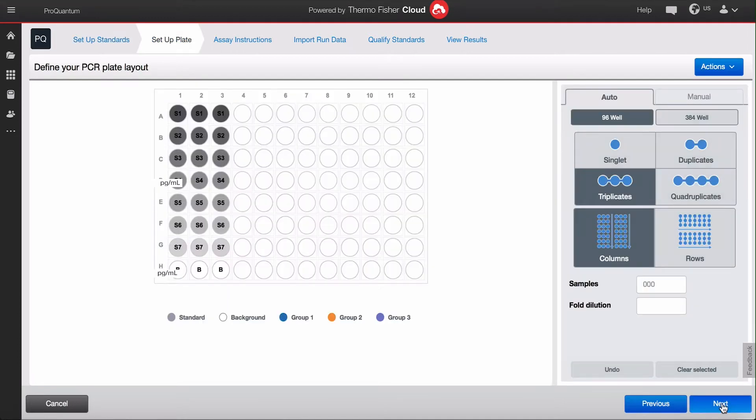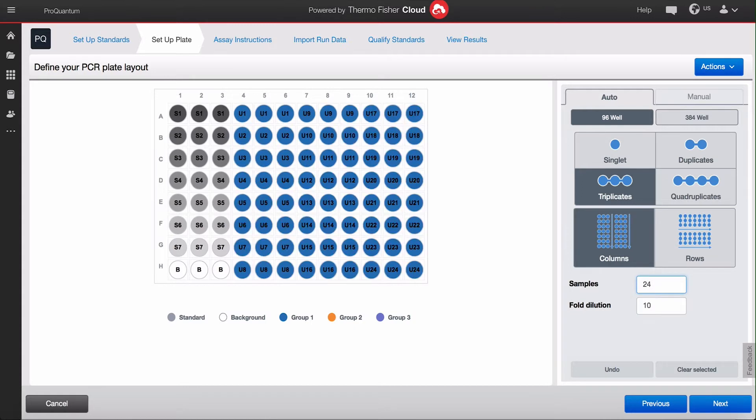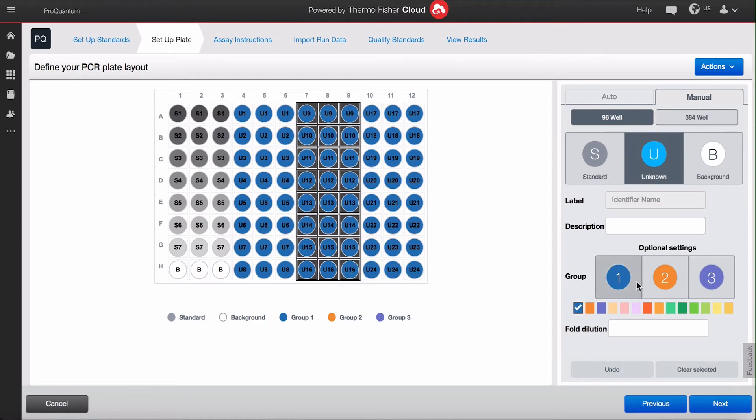Design your plate layout either in automatic or manual mode. We'll show you an example of running an entire 96-well plate with unknown samples in triplicate.